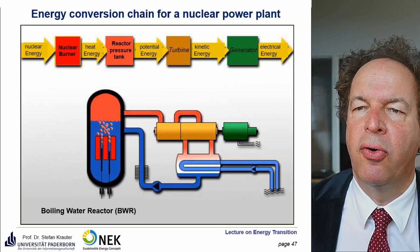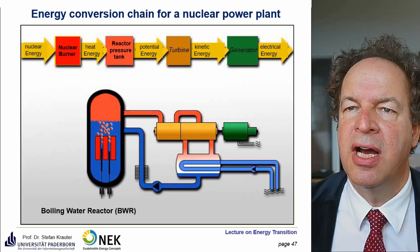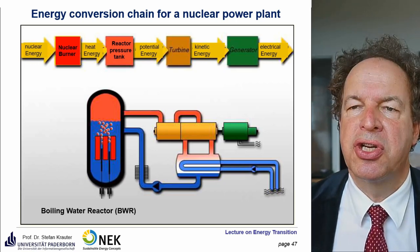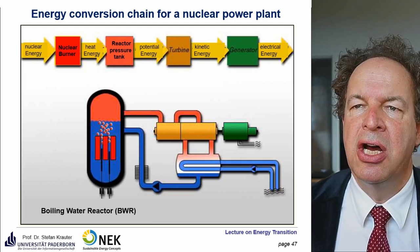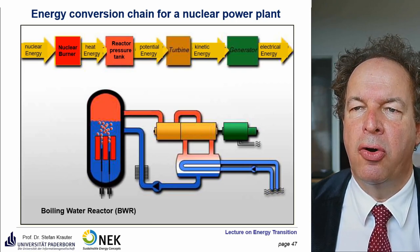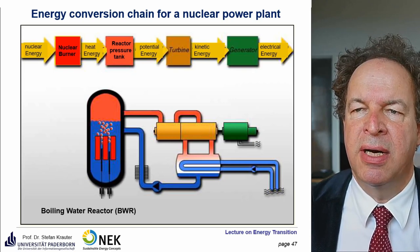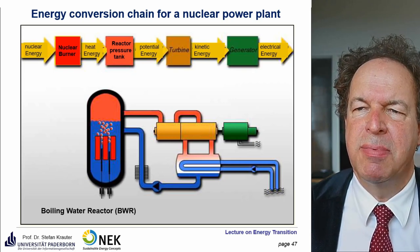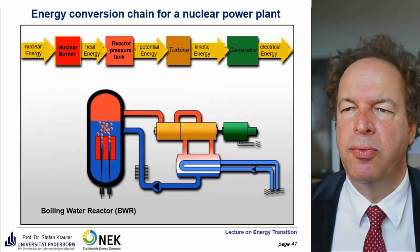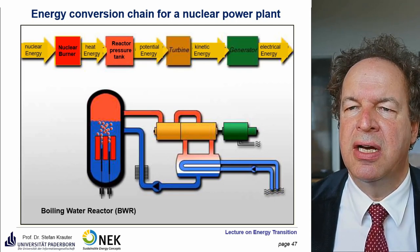Nuclear power plants are quite similar. Instead of combustion, a nuclear chain reaction emits heat, which is used to power a steam turbine and generate electricity. To achieve high efficiency, the exhaust is also cooled. Theoretically you can use that heat, but there are safety concerns. In Germany this heat is not used, though some countries like Korea have connections from the power plant to heat homes.